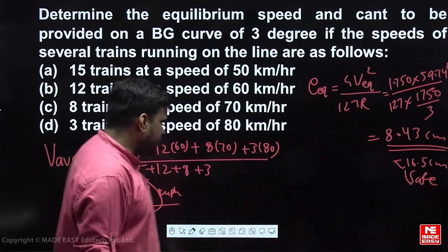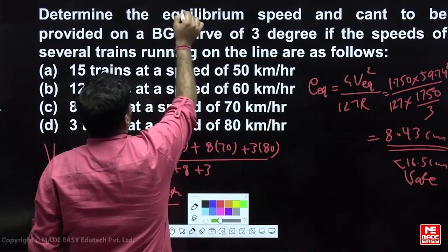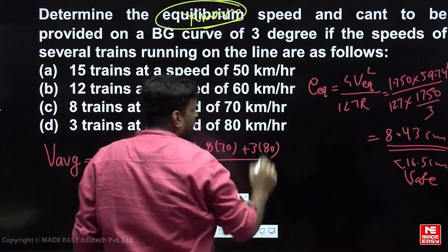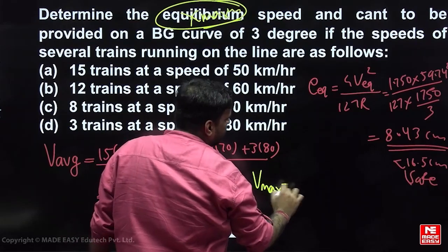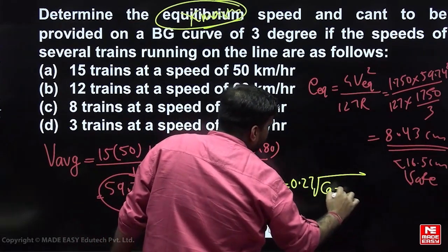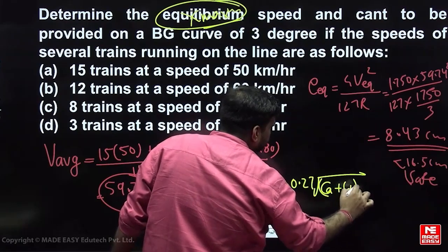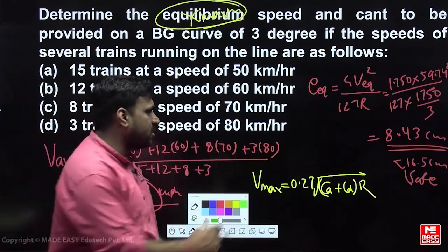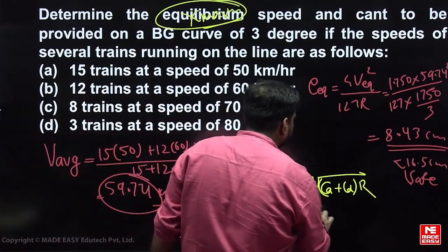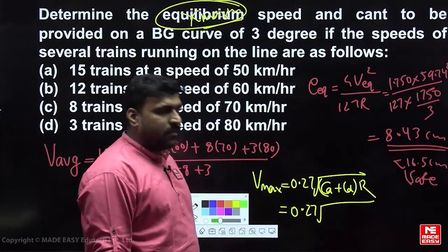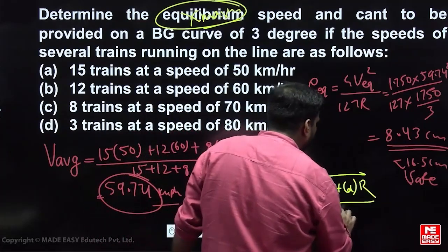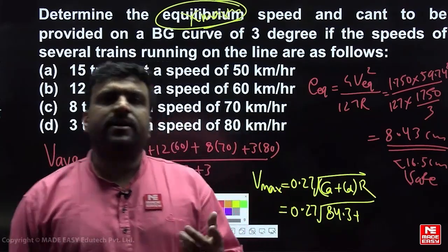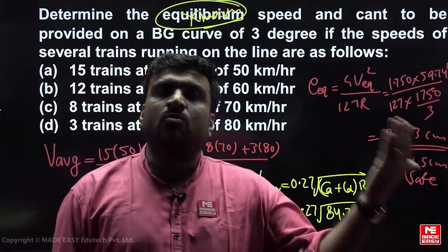Now, if the question asks for the maximum permissible speed on this track, we use the formula: V_max = 0.27 × √((Ca + Cd) × R), as per the new guidelines. Here Ca is the actual cant and Cd is the cant deficiency, both in mm. Ca = 84.3 mm and Cd = 75 mm (for a 3-degree curve, which doesn't allow speeds above 100 kmph, so 75 mm deficiency is used).